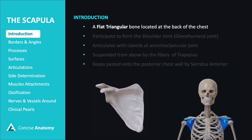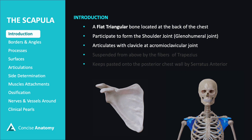The scapula is a flat, triangular bone located at the back of the chest. It helps form the shoulder joint by articulating with the humerus at the glenoid cavity and the clavicle at the acromioclavicular joint. It's supported from above by the trapezius muscle and held against the chest wall by the serratus anterior muscle.